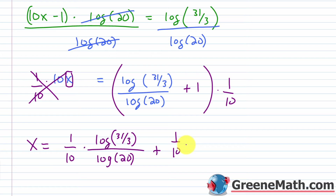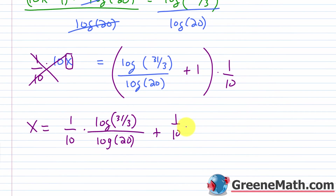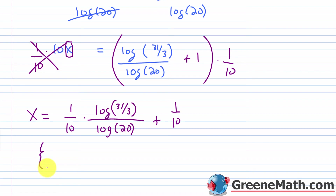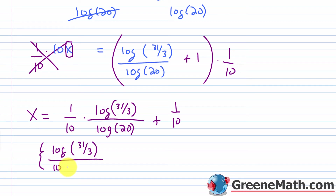In solution set notation, we have log of 31 thirds over 10 multiplied by log of 20, then plus 1 tenth. And that's our answer.